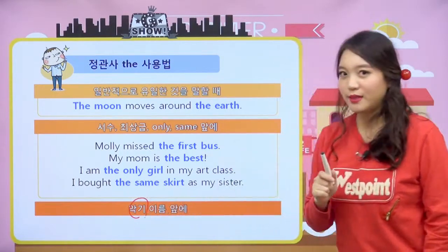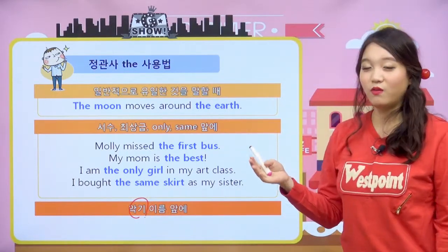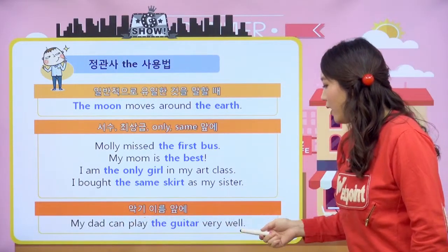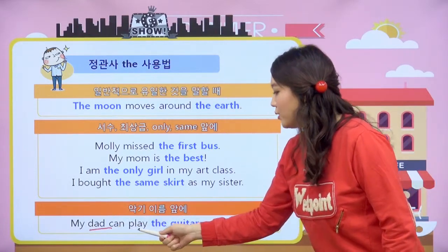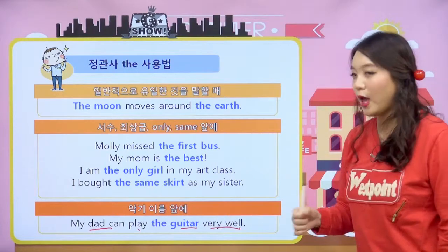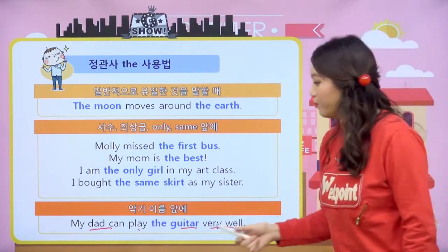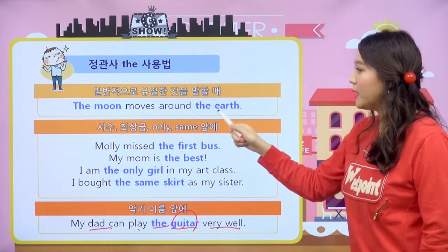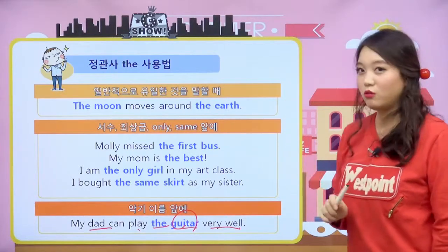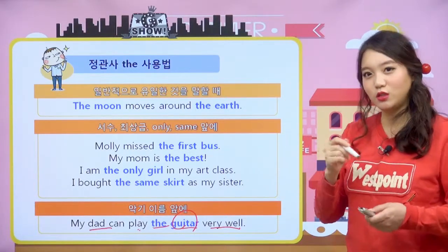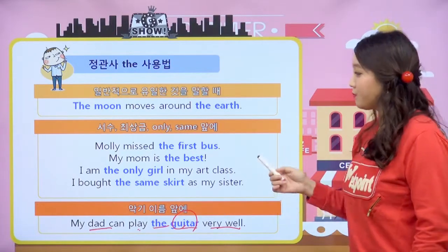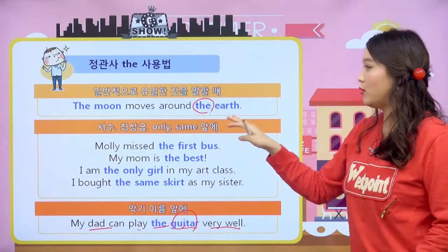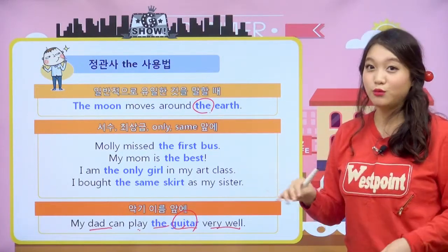악기 앞에도 the를 씁니다. 피아노, 바이올린 이런 것들 앞에 the가 온다는 뜻이에요. My dad can play the guitar very well — 우리 아빠는 기타를 매우 잘 연주할 수 있대요. 악기 이름 앞에 the가 오죠. 이렇게 구체적으로 the가 쓰이는 상황들이 많은데 이거를 다 기억을 해야 돼요. 부정관사가 오는 경우와 the가 오는 경우가 다르고 뜻이 달라지기 때문에 잘 기억을 해야 됩니다.